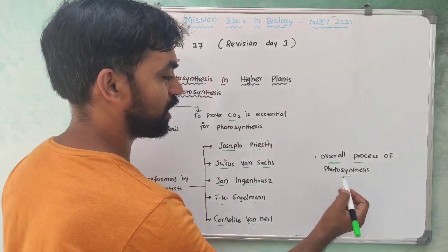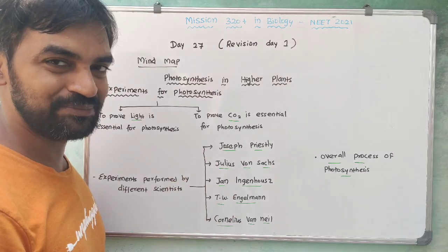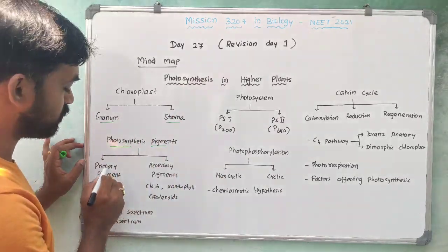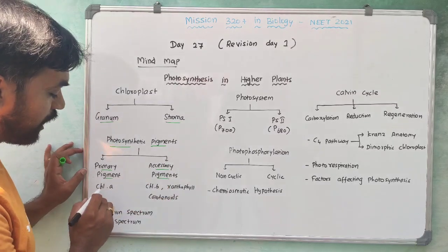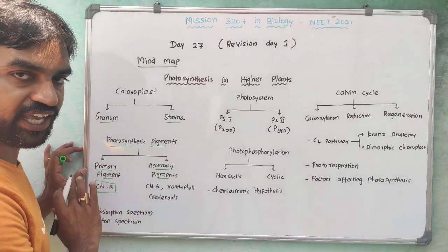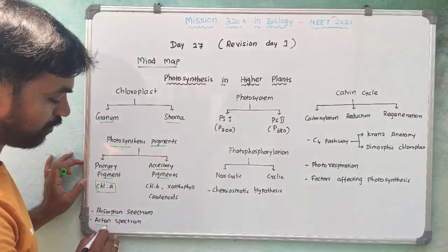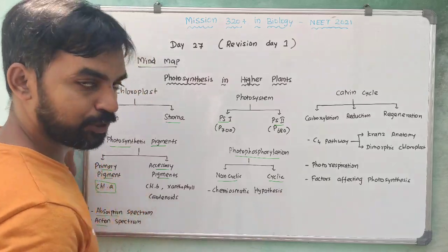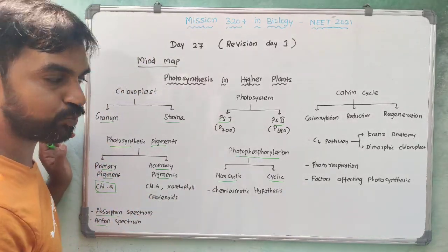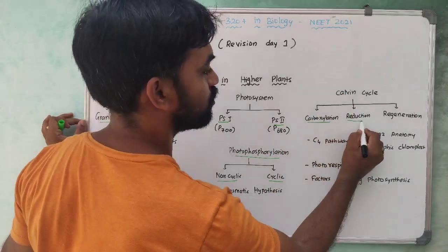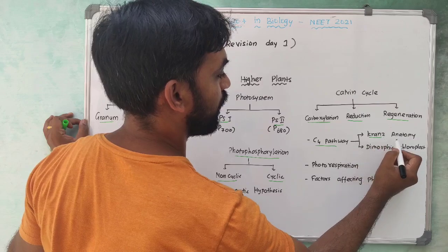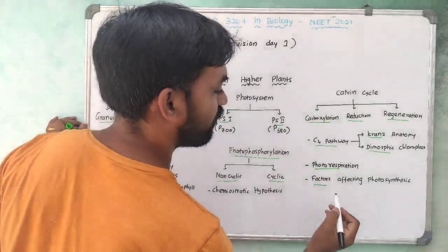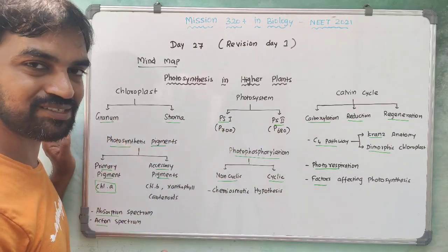The overall process of photosynthesis is covered as an introduction. Topics include: chlorophyll, limiting factors, absorption spectrum, action spectrum, Photosystem PS1 and PS2, photophosphorylation — cyclic and non-cyclic — electron transport, the Calvin cycle (carboxylation, reduction, regeneration), C4 pathway, Kranz anatomy, dimorphic chloroplast characteristics, photorespiration, and factors affecting photosynthesis. This is the Mind Map for Photosynthesis in Higher Plants.